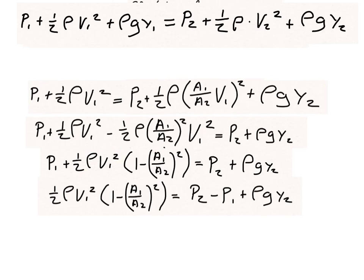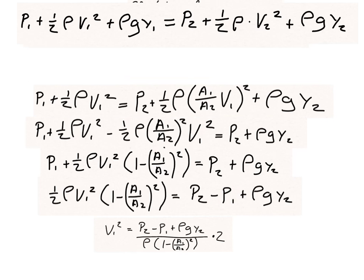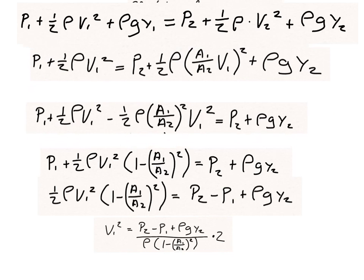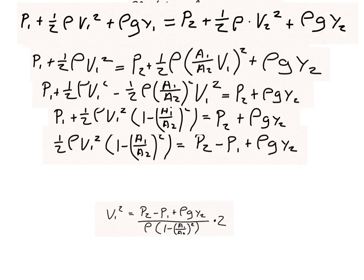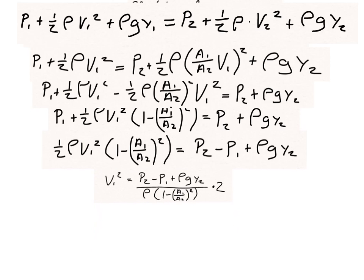After subtracting the initial pressure and multiplying through by 2 and dividing by the density and the bracketed term, we arrive at: v1 squared equals 2 times (P2 minus P1 plus density times gravity times y2) divided by density times (1 minus (A1 over A2) squared). To find the initial velocity, we take the square root of this expression.